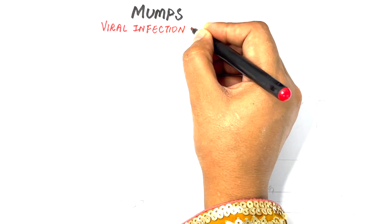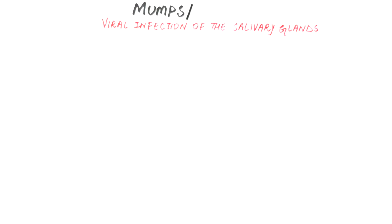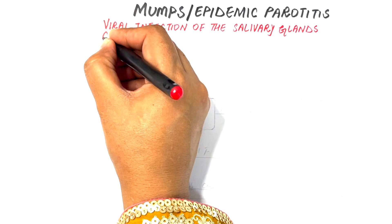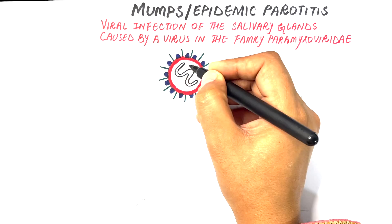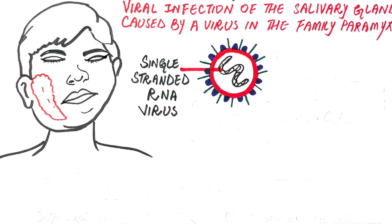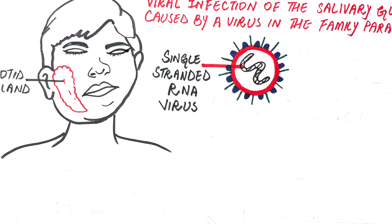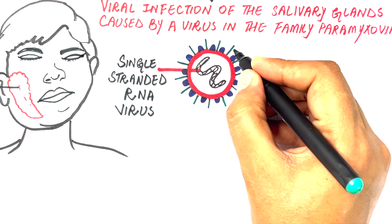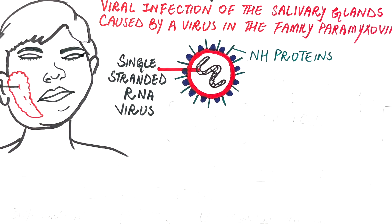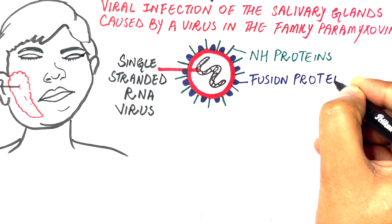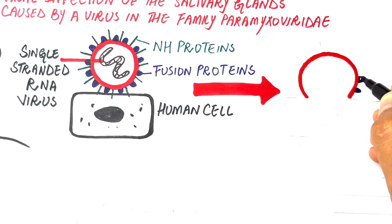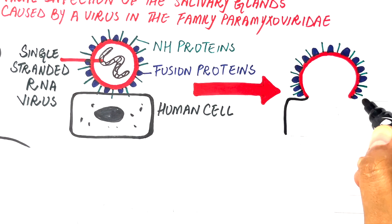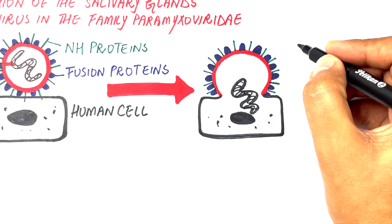Mumps is a viral infection of the salivary glands primarily involving the parotid gland, hence given the name epidemic parotitis. The infection is caused by a single-stranded RNA virus in the family Paramyxoviridae. Over the viral envelope, the virus has two glycoproteins: the HN or neuraminidase and hemagglutinin protein, responsible for attachment of the viral cell to a host cell, and the F or fusion proteins, which are responsible for fusion of viral and host cell membranes, allowing entrance of the viral RNA into the host cell and resulting in multiplication of viral cells within host cells.